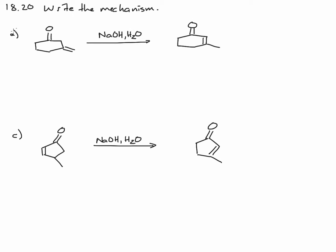Moving into chapter 18, let's look at problem 20 where we're asked to write the mechanism for the conversion of the starting material with these reagents to the product. We're going to look at parts A and C. Keeping with our general strategy, let's identify the major functional groups in both the starting material and the products. We can see that both the starting material and the product have a CO double bond and a CC double bond.